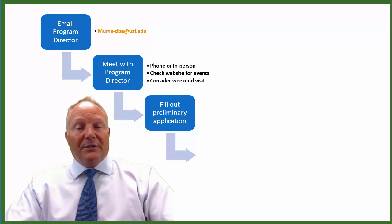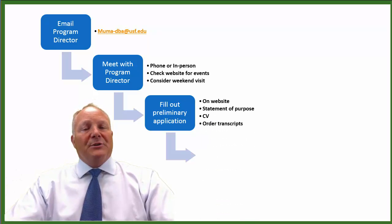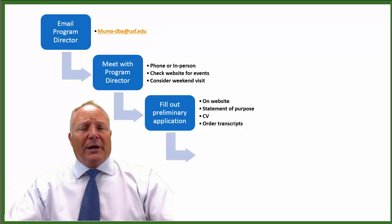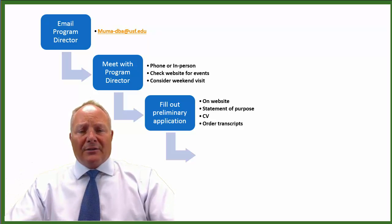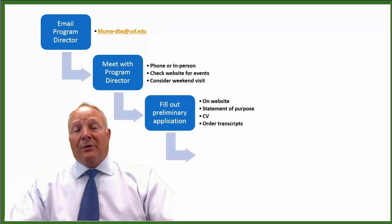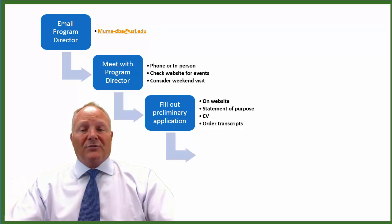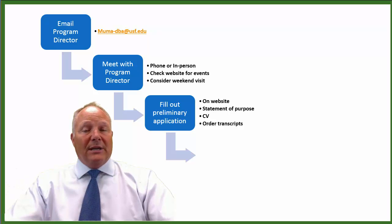The third step in the program, assuming continued interest, would be for you to fill out the preliminary application. The preliminary application really has four parts: your statement of purpose, which basically is your way of communicating to us, in a couple of pages, your particular interest in the program and your particular interest in a problem or area of research that you are considering. The second piece would be a current resume or CV, the third piece would be your transcripts — at this stage I'll accept informal transcripts, which will be copies of your undergraduate and graduate degrees — and the fourth piece will be the actual PDF application form completed by you, available online on our DBA website.